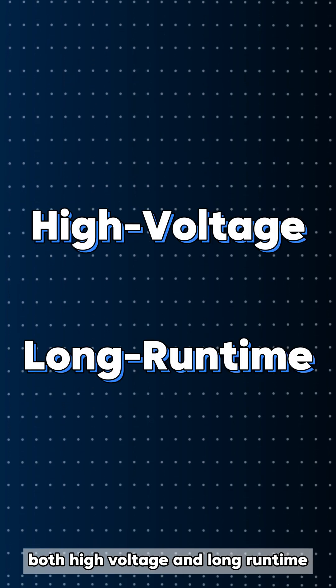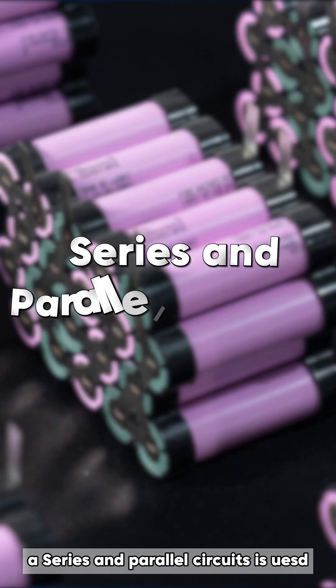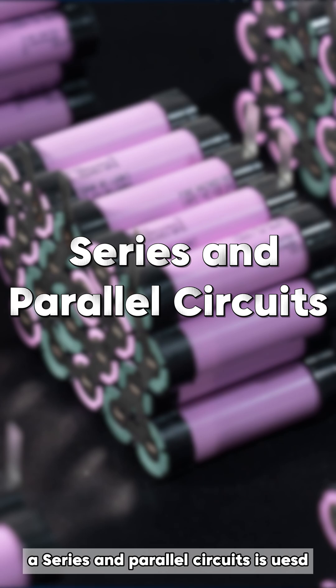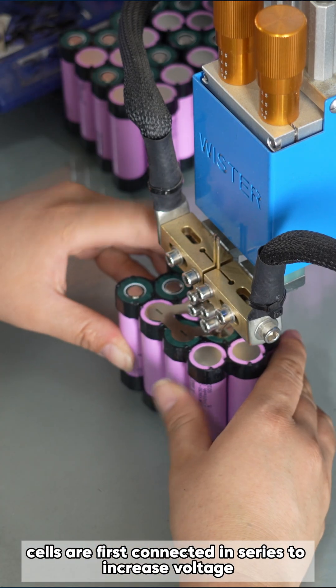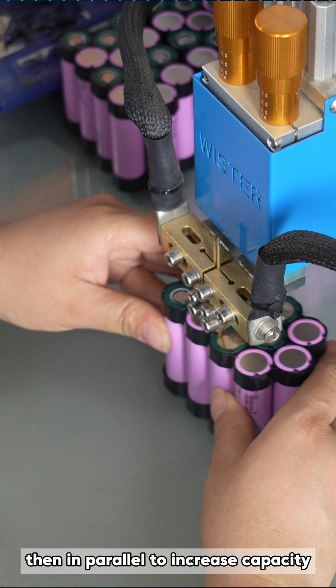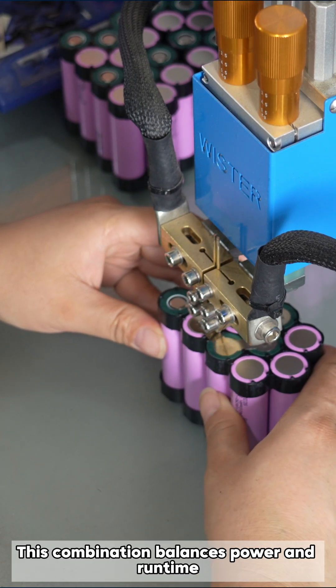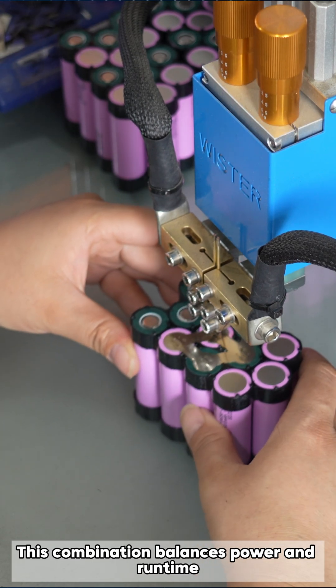Many high-performance devices require both high voltage and long runtime. In such cases, a series and parallel circuit is used. Cells are first connected in series to increase voltage, then in parallel to increase capacity. This combination balances power and runtime.